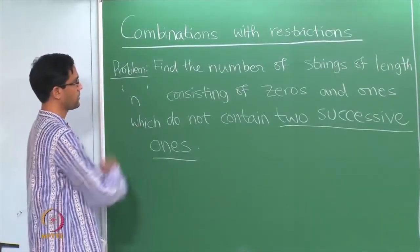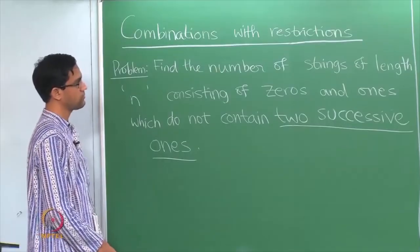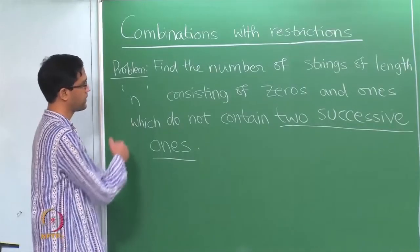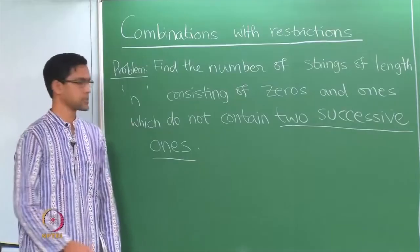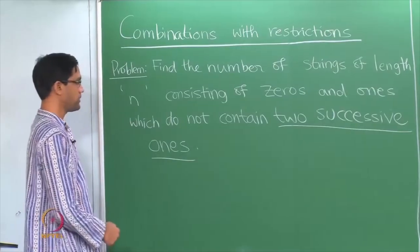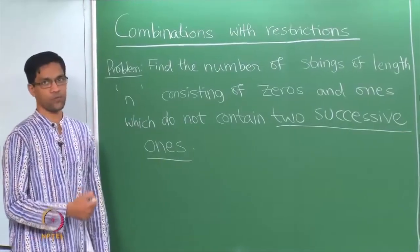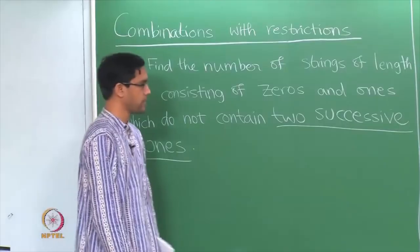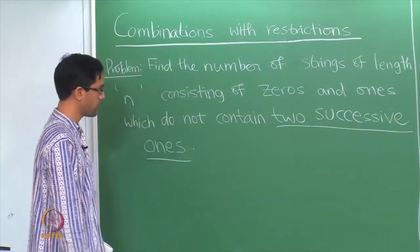Here is a prototypical problem: find the number of strings of length n consisting of 0s and 1s in which you do not have 2 successive 1s. So let us try and write down a few such examples.